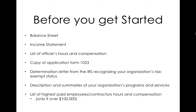You're going to need a copy of your application Form 1023 and a determination letter from the IRS recognizing your organization's tax-exempt status. Those two things have certain information like your EIN, your tax year, and other official information you're going to need. You'll also need a description and summary of your organization's programs and services — basically what are the three things you do and describe them. And lastly, a list of the highest paid employees, contractors, and their compensation, but only if over $100,000.